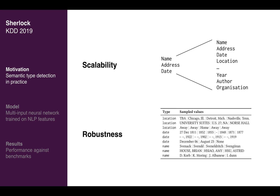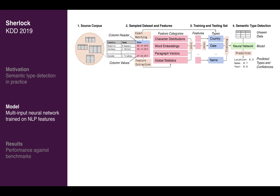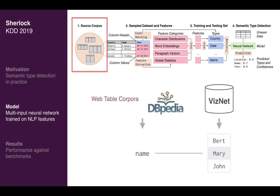To address these challenges, we introduce a machine learning approach to semantic type detection. We start with prior work that matches types from DBpedia with the web tables corpus, then match these types with column headers from VisNet, a large-scale repository of real-world datasets.